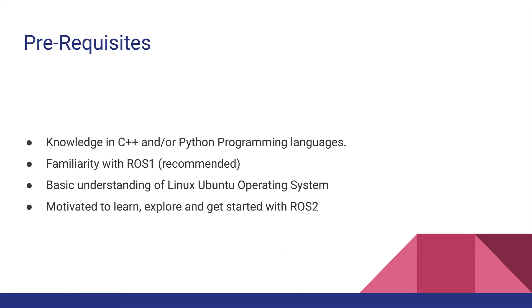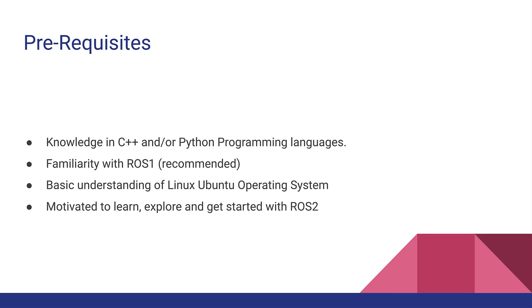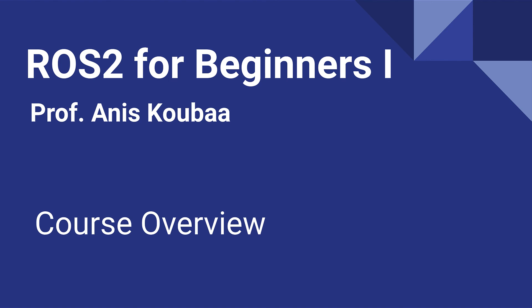Regarding the prerequisites, it is first required to have some background in C++ and Python programming languages. It is also highly recommended that you are familiar with ROS1. If you don't have enough background on ROS1, I strongly recommend that you enroll in my course ROS4Beginners1: Basics, Motion, and OpenCV, and then return to this course. In addition, you should have a basic understanding of the Linux Ubuntu operating system. Welcome to the course and to the world of ROS2, the future generation ROS ecosystem for robotics software development.